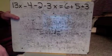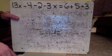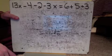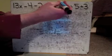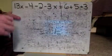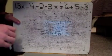Alright, here's our next problem. This one is going to be a little bit different, and you'll see why in just a second. The first thing I want to do is combine things together that are on each side of the equal sign.